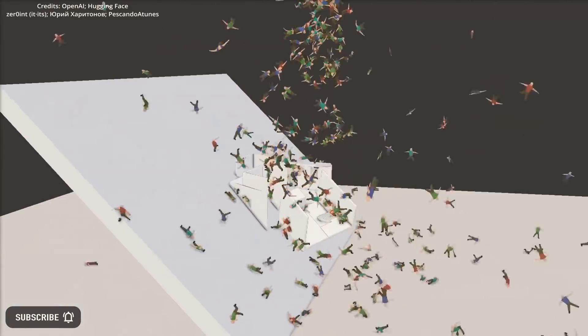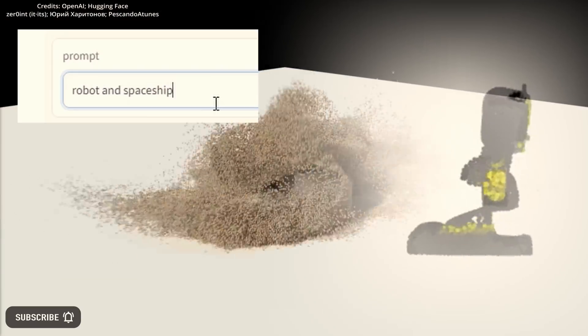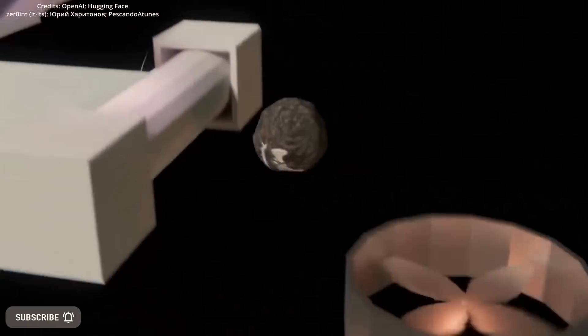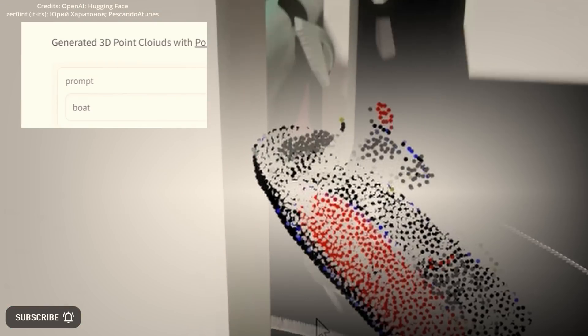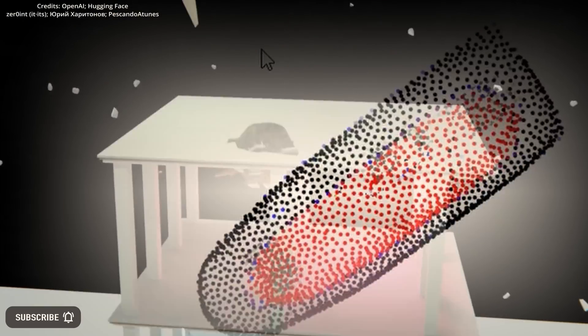Imagine the power of being able to create a 3D model of any object for Blender by simply describing it in words. Point E from OpenAI is making this possible with its revolutionary text-to-3D mesh artificial intelligence. This new open-source AI project enables 3D modeling using text prompts, expanding the capabilities of its text-to-image software from two dimensions to three.